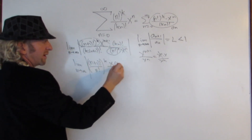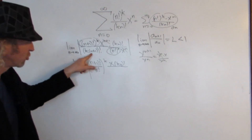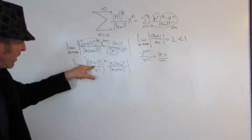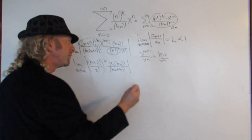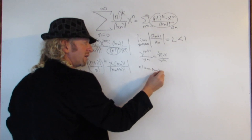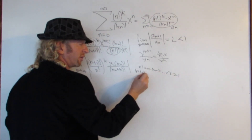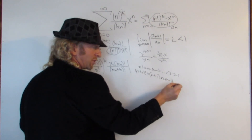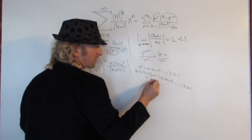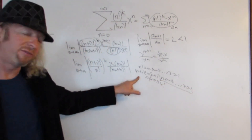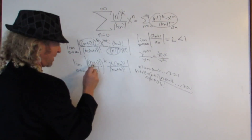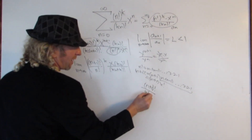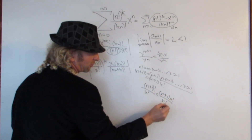We have kn factorial, and here we can distribute the k: kn plus k factorial. Now n plus 1 factorial over n factorial is just n plus 1. Why? Because n factorial is n times n minus 1 times ... times 3 times 2 times 1. And n plus 1 factorial is n plus 1 times n factorial. So these cancel and you're left with just n plus 1. So we have n plus 1 factorial over n factorial equals n plus 1 n factorial over n factorial, giving us n plus 1.